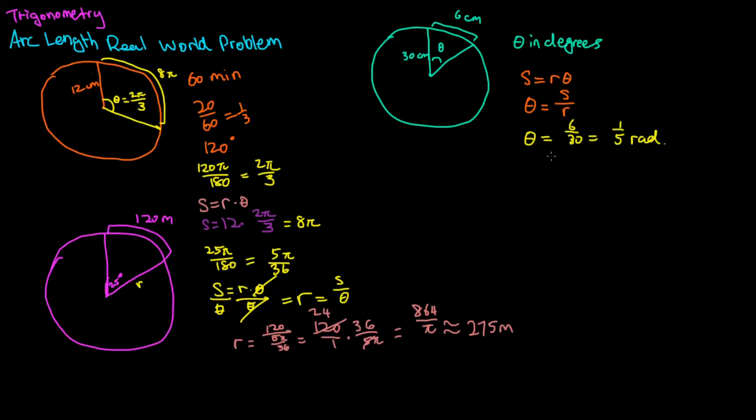Now to go ahead and change this into degrees, we are going to multiply it by 180 over pi. So 1 fifth multiplied by 180 over pi, that is going to be 36 divided by pi, which is approximately 11.46 degrees.